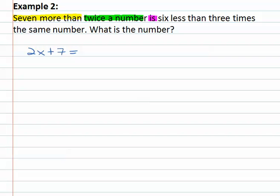What do we have next? Six less than. Six less than, that means we are subtracting six. Remember it's built backwards. We don't know what we're subtracting six from yet. And I'm out of colors, but we're left with three times the same number. Three times that same variable x.